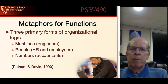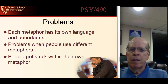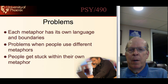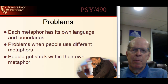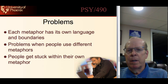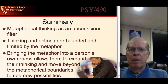There are also metaphors for functions: engineers like the machine metaphor, HR employees tend toward people metaphors, and accountants tend to think in numbers. This is based on Putnam and Davis and their work in descriptive psychology. Each metaphor has its own language and boundaries. Problems arise when people use different metaphors — they can't relate because they're thinking and speaking differently — and people can get stuck within their own metaphors, limited by their boundaries.